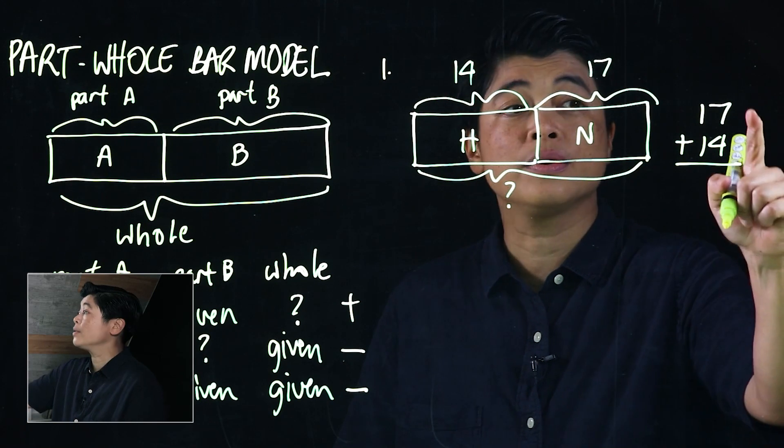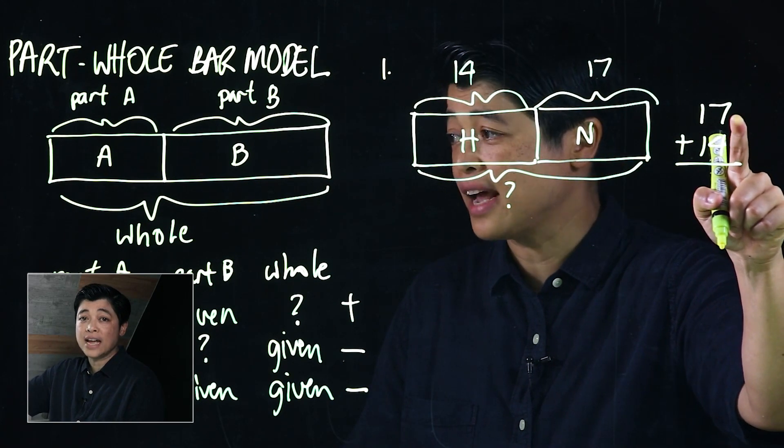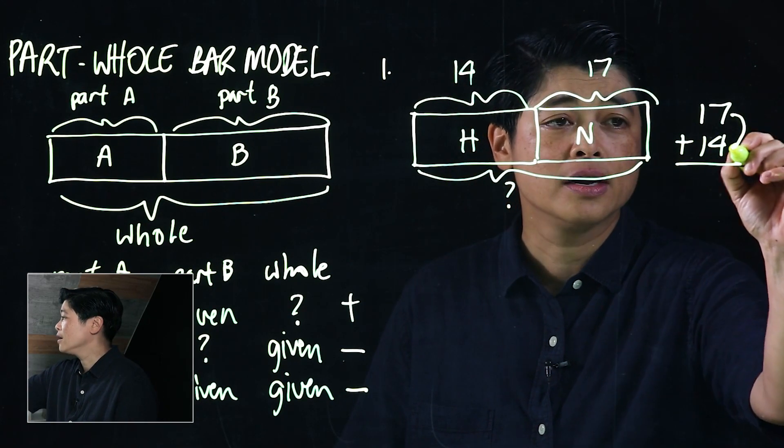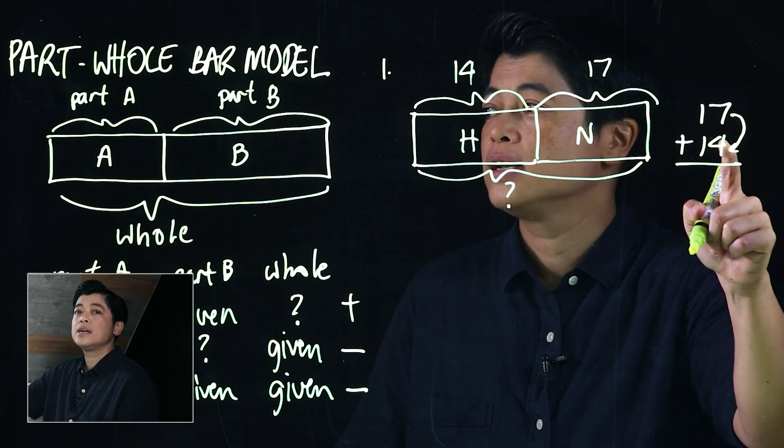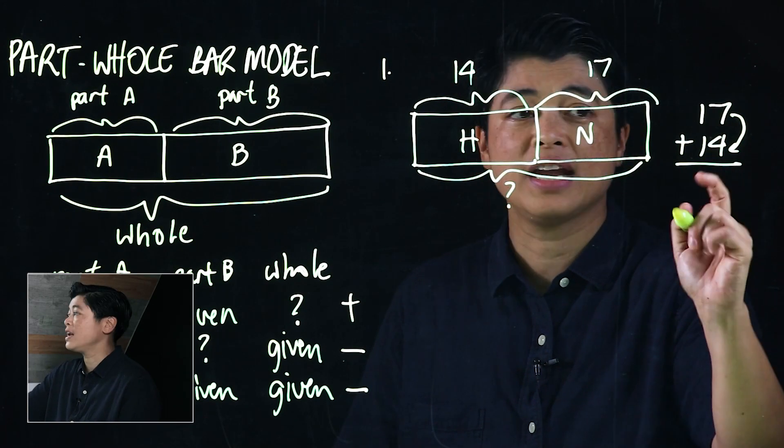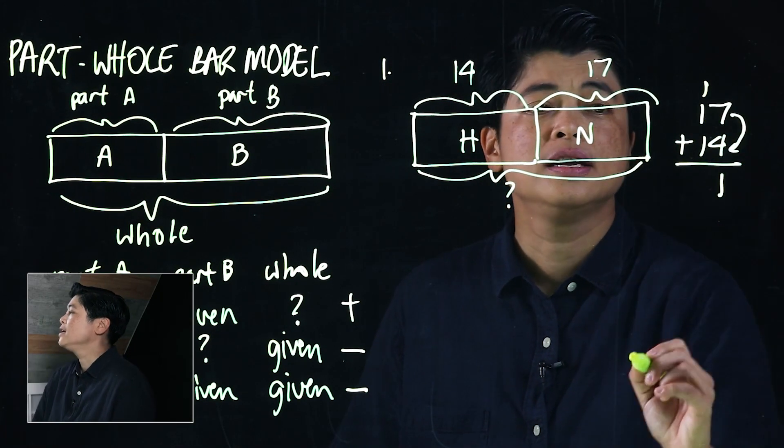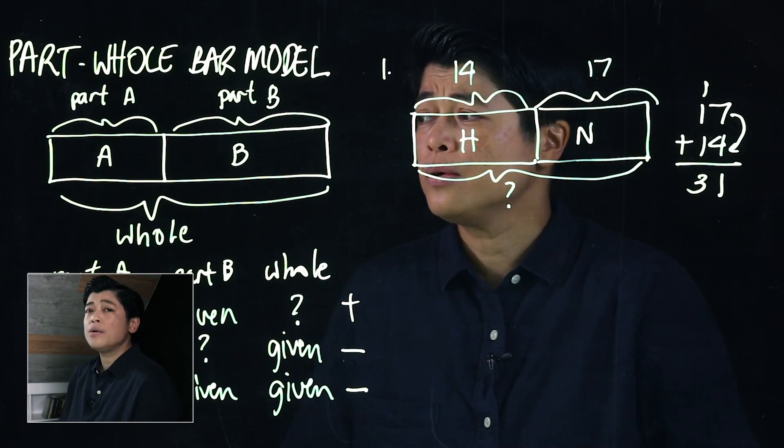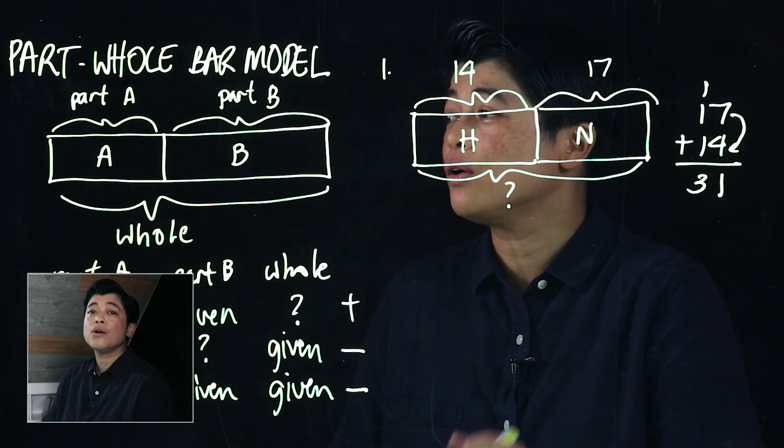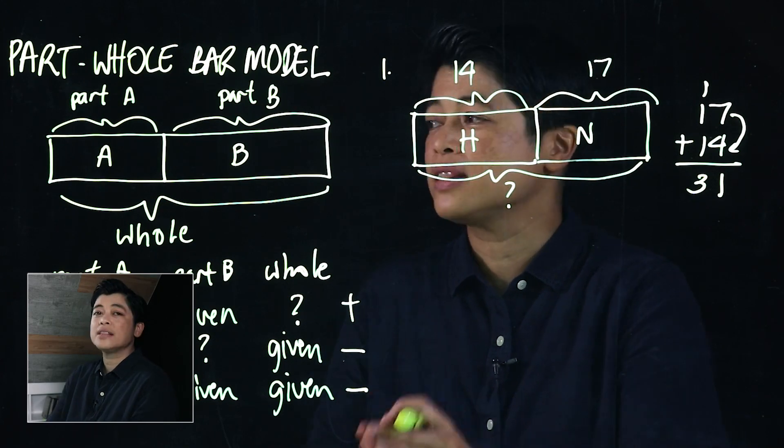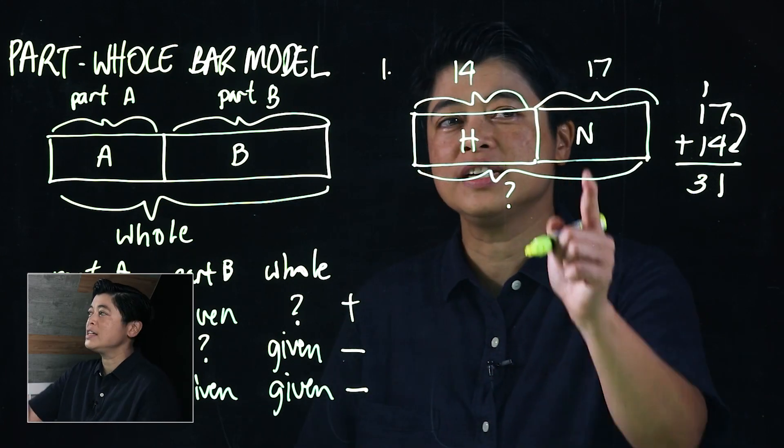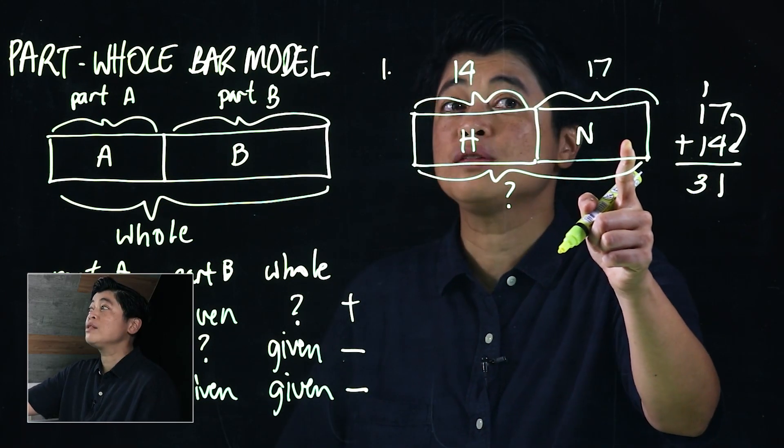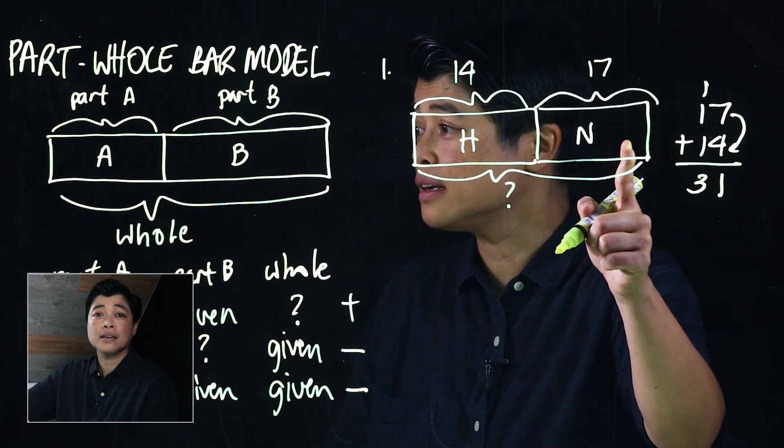We start with the bigger component, 7, and we add the 4. Seven needs a 3, we have an extra 1, that makes it 11. Which means this is 31. As much as possible we want to make the shapes proportional. This is not the best drawing but it will do. It takes practice so don't be too hard on your kids.